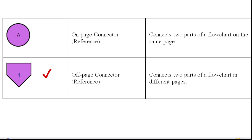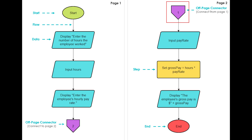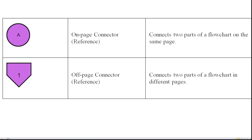If you have a flowchart spread across two different pages, you can use the Off-Page Connector to continue from page 1 to page 2. At the end of the first part, place the Off-Page Connector, which means 'connect to page 2.' These are the important symbols used in the flowchart.